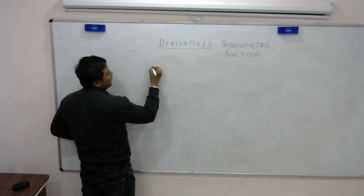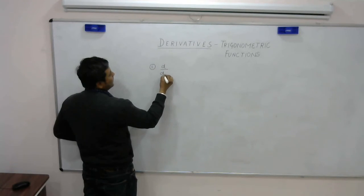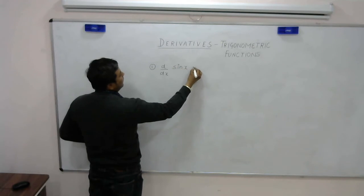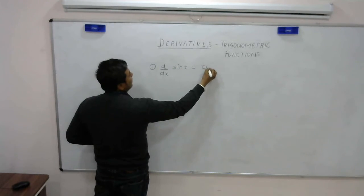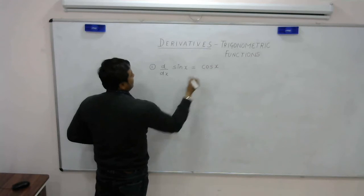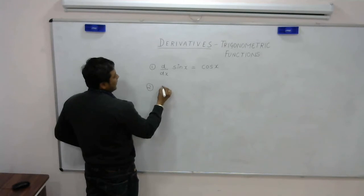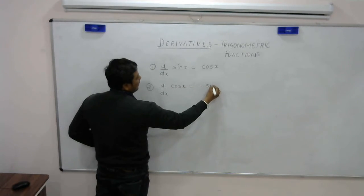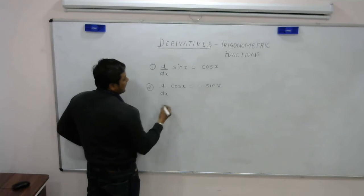First formula is derivative of sine x. The formula for derivative of sin x is cos x. Second, derivative of cos x, that is minus sin x.